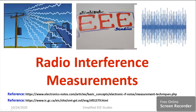The high frequency signal will be interacting with the communication circuits, and definitely the signal passing through the communication circuit will be getting distracted. Let us study how to measure radio interference from a dielectric material. That is the main content I would like to discuss in this session. Let us move on.